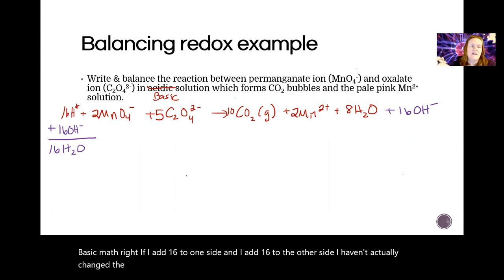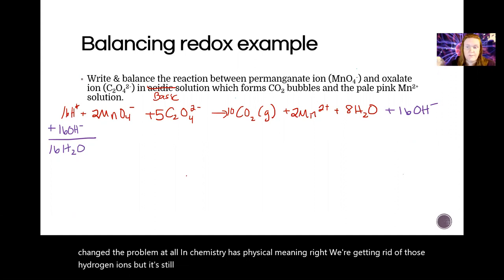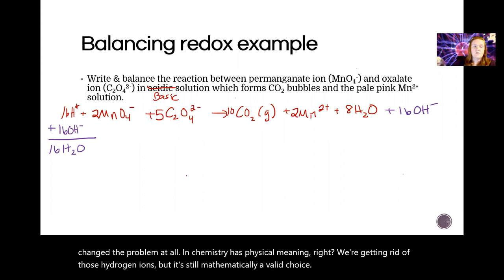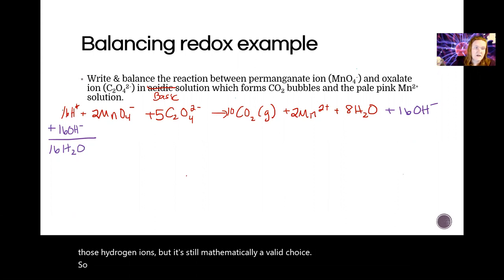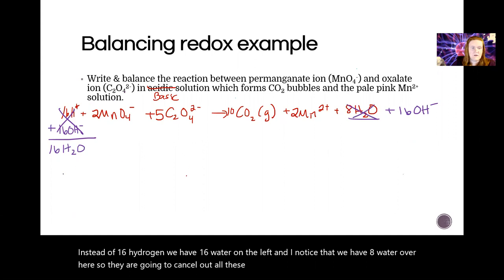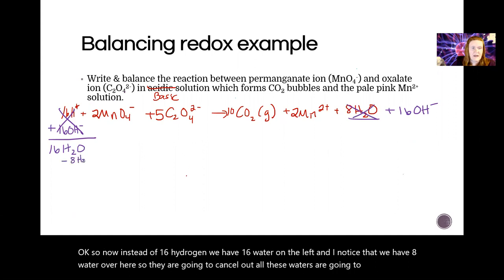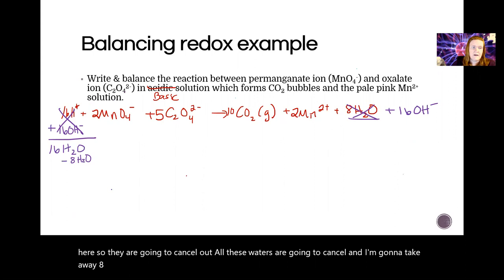In chemistry it has physical meaning - we're getting rid of those hydrogen ions, but it's still mathematically a valid choice. So now instead of 16 hydrogen we have 16 water on the left, and I noticed that we have eight water over here so they are going to cancel out. All these waters are going to cancel and I'm going to take away eight of those.